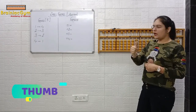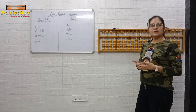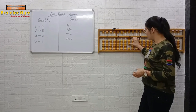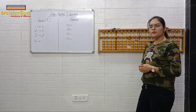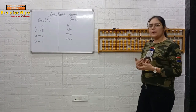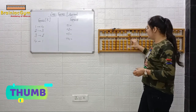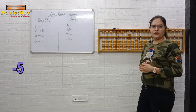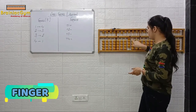Plus two, plus one, plus two, plus one, plus one, plus five — so plus five is finger. Plus five, plus one, plus one, plus one, thumb plus one, minus five, minus five with finger, minus five.